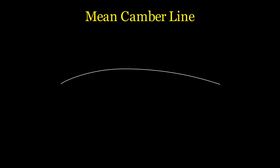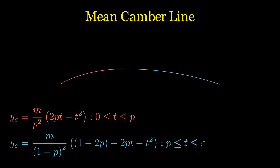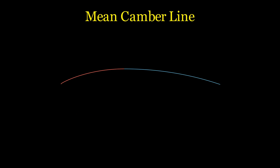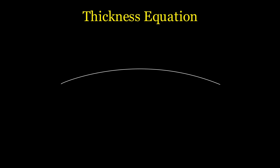We will start with the mean camber line, but actually we need two equations to create the full curve. It's a piecewise parametric curve where one equation starts at zero and ends at P, and the other goes from P to the chord length. Here are the two polynomial y-coordinate equations that the committee settled on. To put these in a parametric equation we need the x coordinates — that's just the T parameter. Plugging in T from zero to P gives the first half, and values from P to the chord length give the second half. With that we only need the thickness distribution.